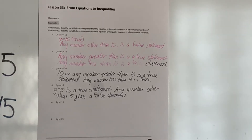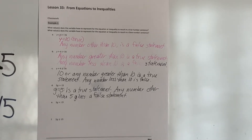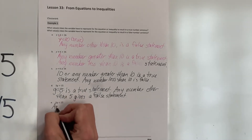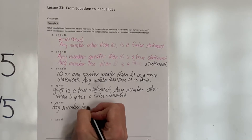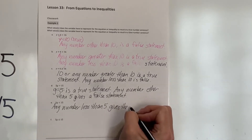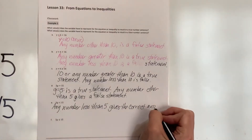Let's try going lower than 5. Does 4 work? 3 times 4 is 12, and 12 is less than 15 — 4 works! Let's try 3: 3 times 3 is 9, and 9 is less than 15. Let's try 2: 3 times 2 is 6, and 6 is less than 15. So any number less than 5 gives a true statement.